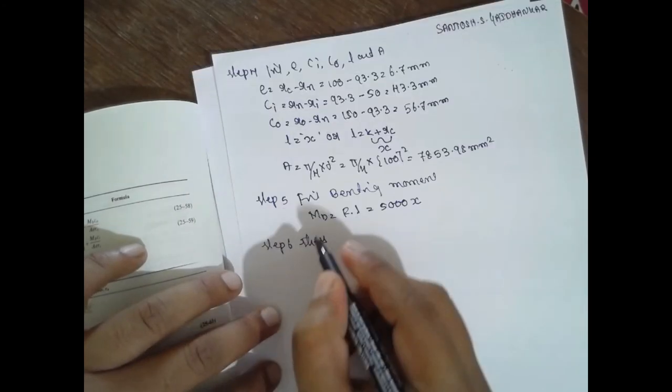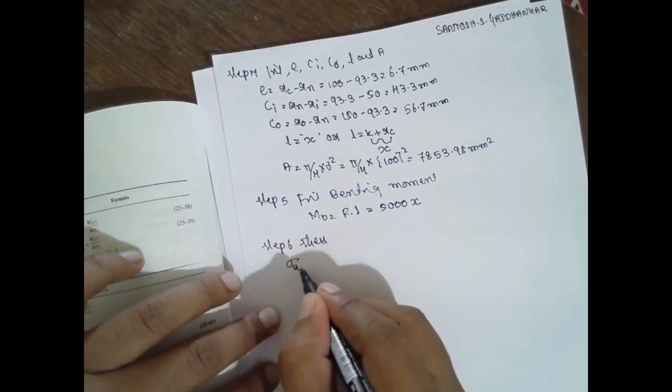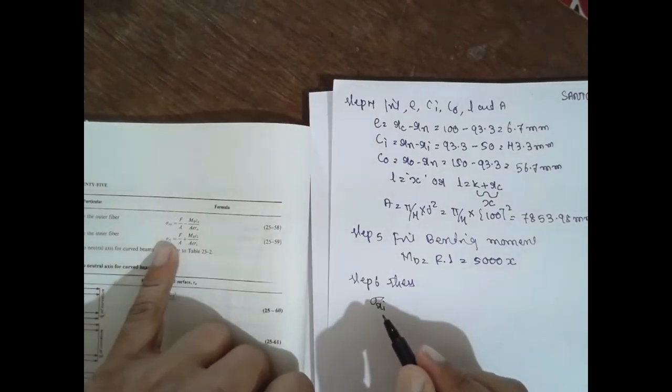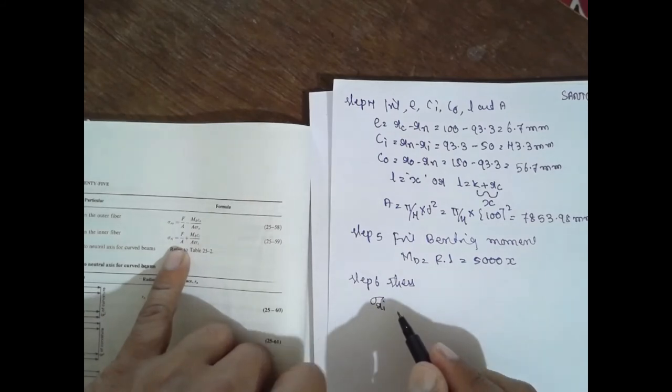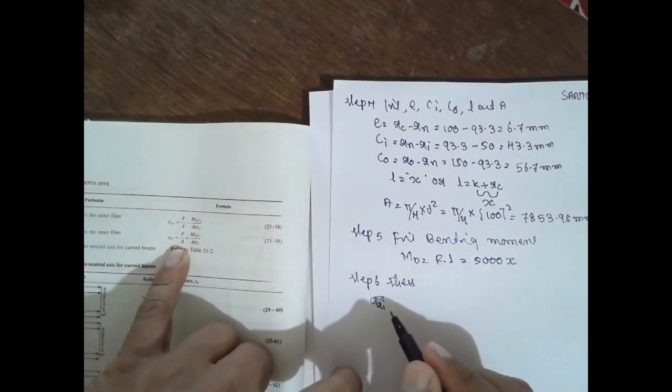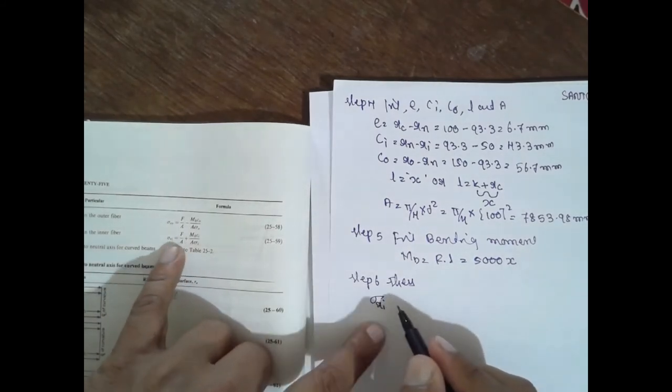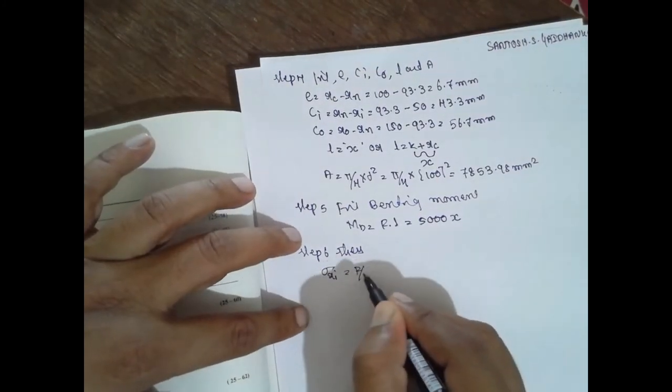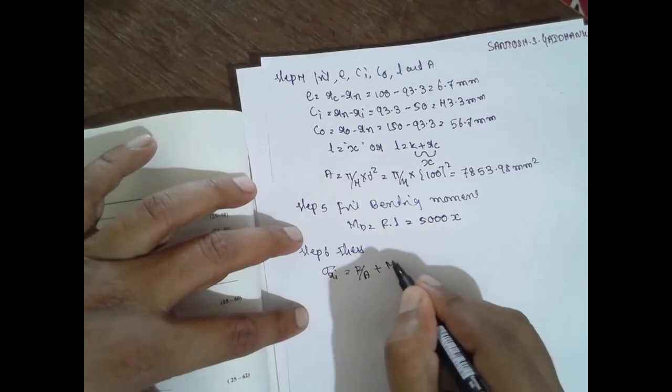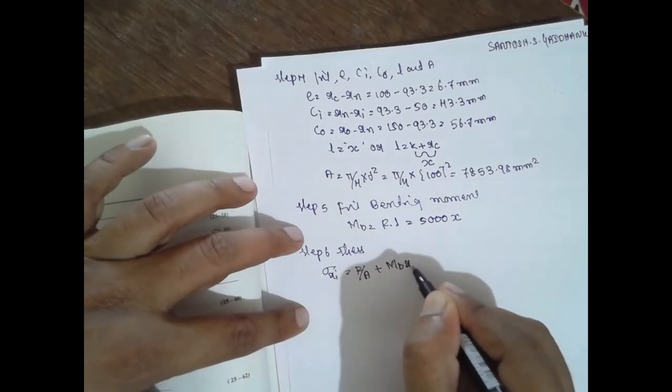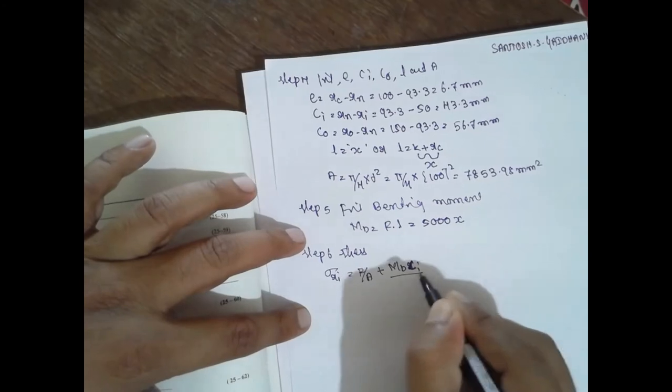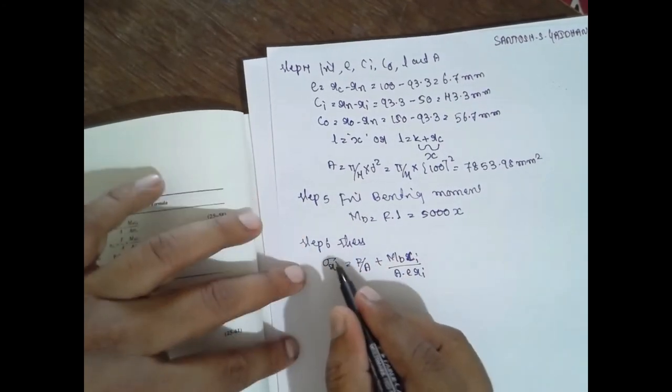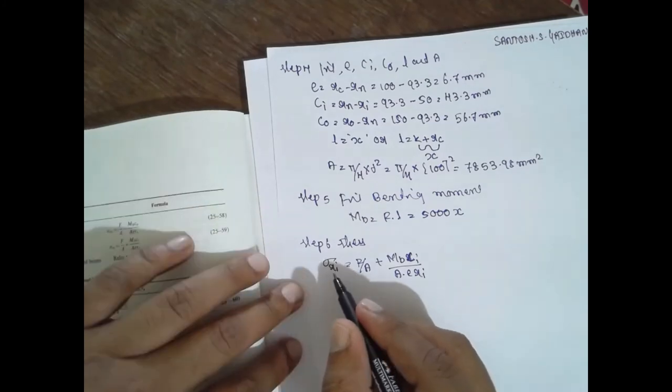Next, step 6: you have to find out this process. Now, sigma ri is given in the data handbook. This is the formula I am using for inner fiber. This formula you have to use. f is equal to f by a plus mb, sorry, ci divided by a e ri.